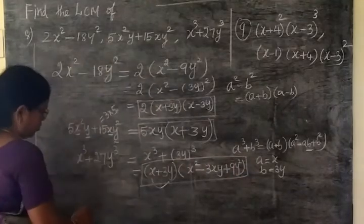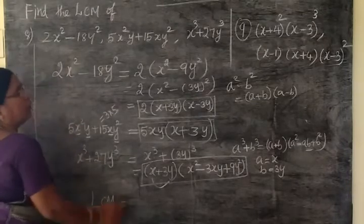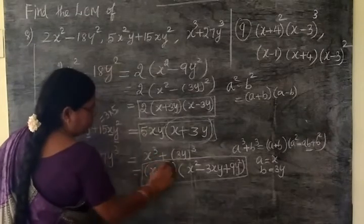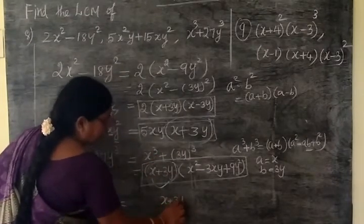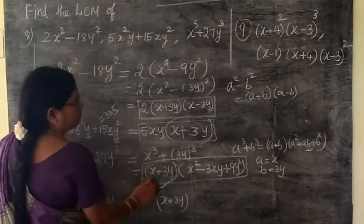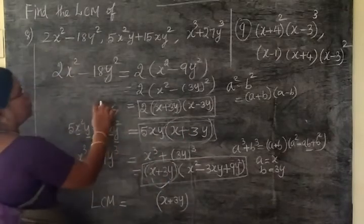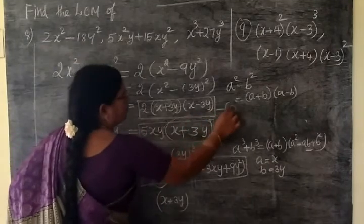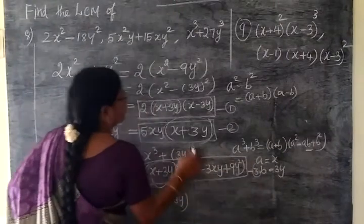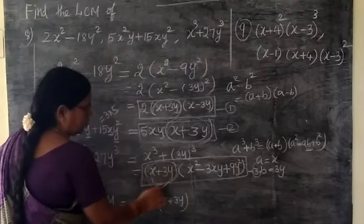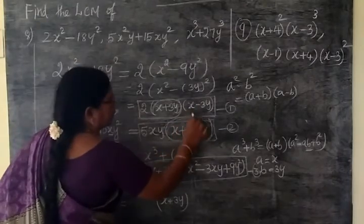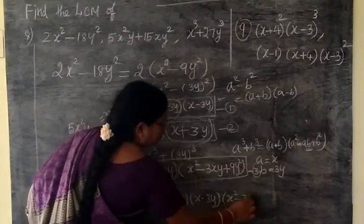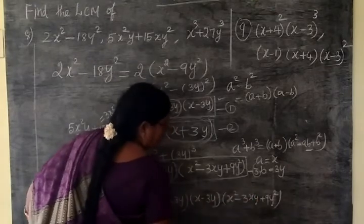You are writing the answer as LCM equal to: if you remove the common factor, you can write x + 3y. x + 3y common are that, you can write one time x + 3y. Then x + 3y will be written, then second one x - 3y. Then remaining x² - 3xy + 9y².